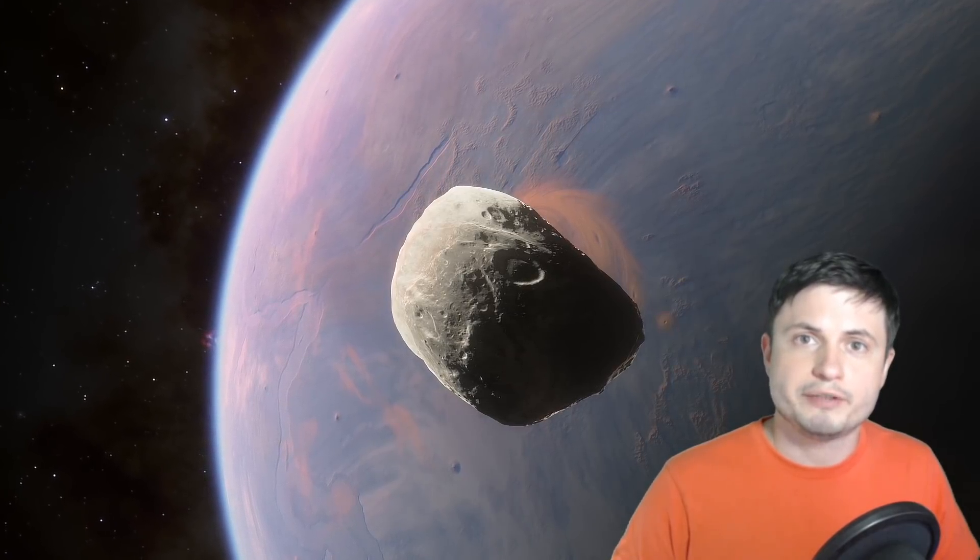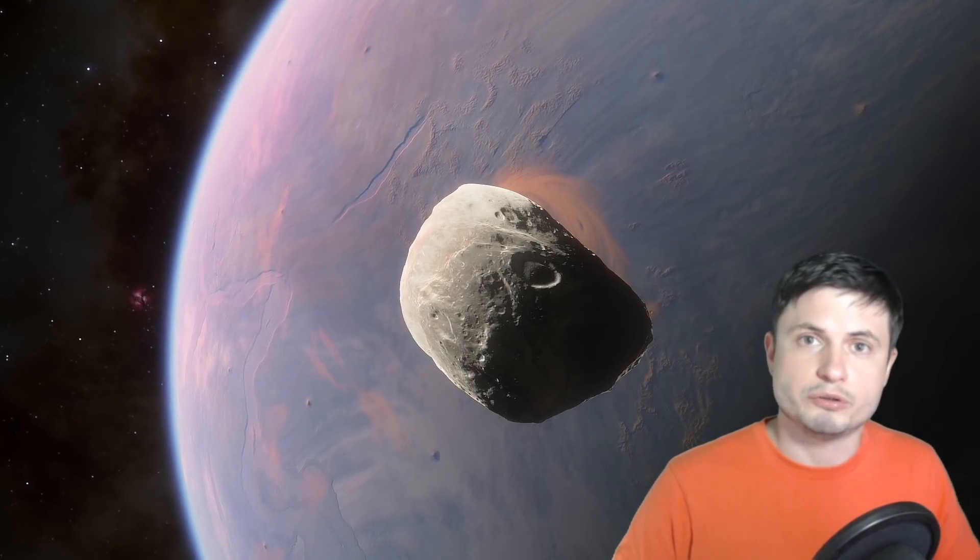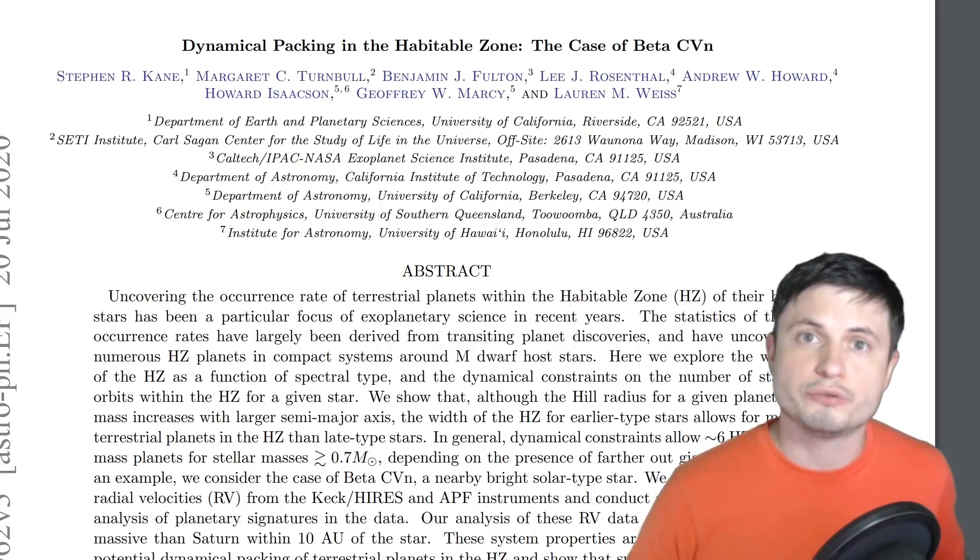Which means that larger F-type stars can technically easily have seven exoplanets in their orbit and all of them can be habitable. But until further proof or until actual physical evidence of this, for now this is just a theory.